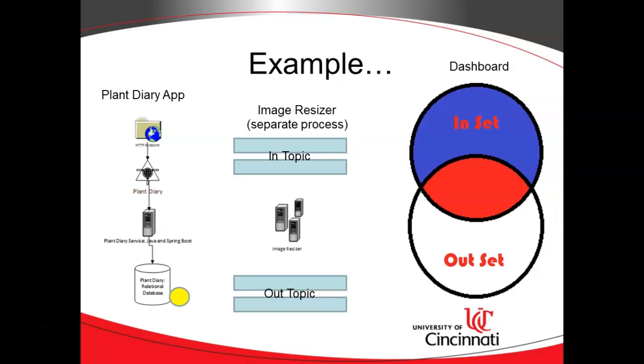Three separate applications are connected together by the concept of topics, or it could also be queues. In our case, and the example I'll show in a moment, we're using topics that are served by Kafka. A topic means we can add something to it and multiple programs or multiple processes can subscribe to this topic and can be notified when something is added to the topic. We start by uploading an image to the plant diary application. The plant diary application is going to take this image information and it's going to add that to our in topic.